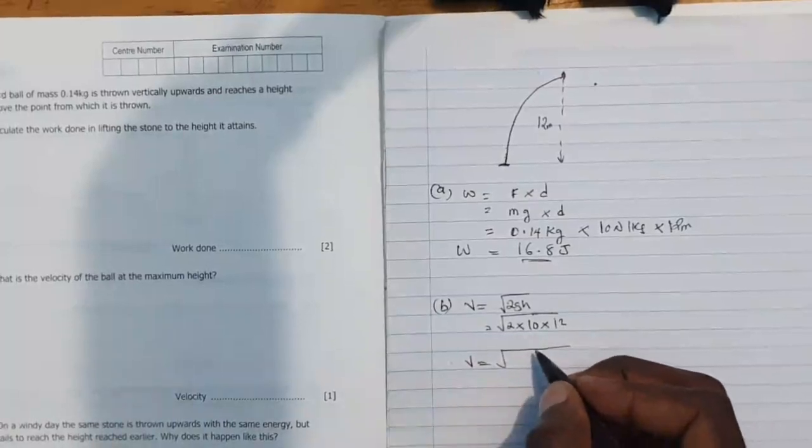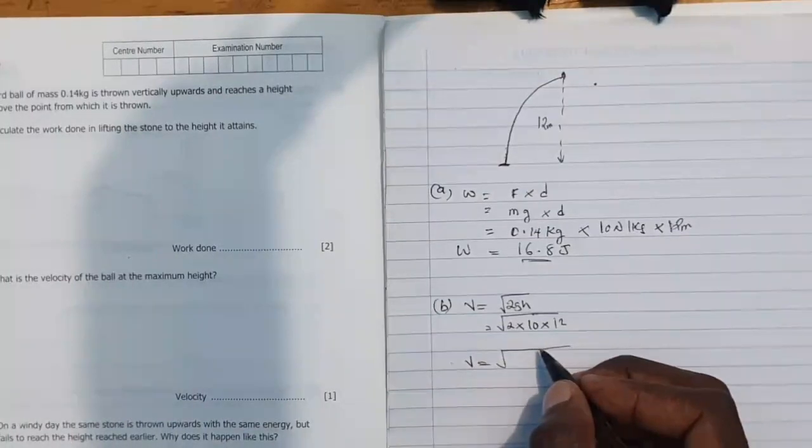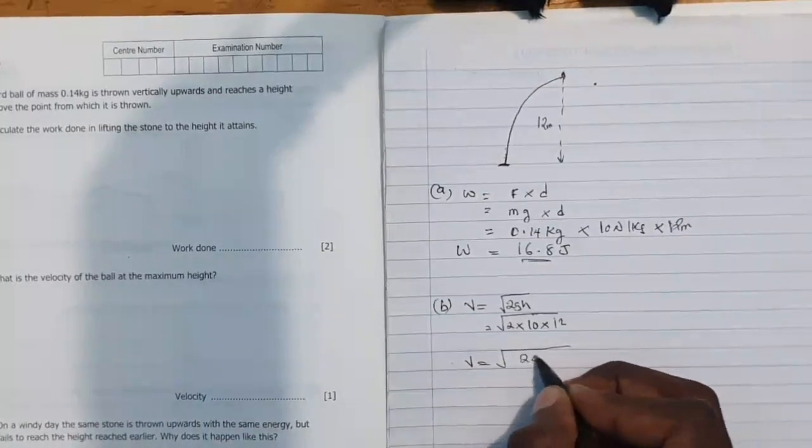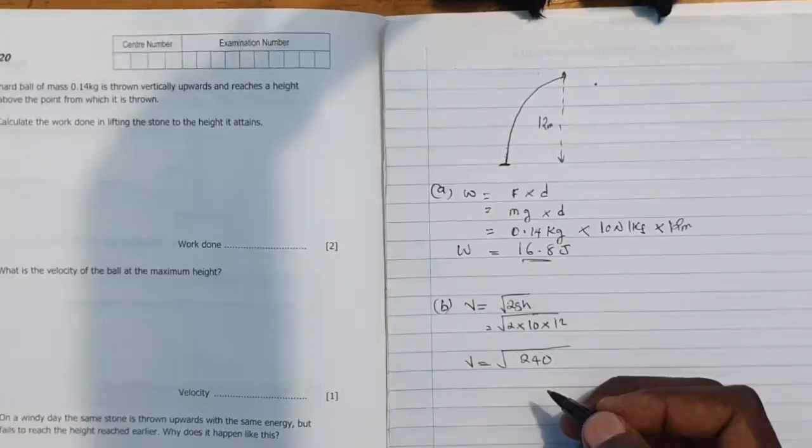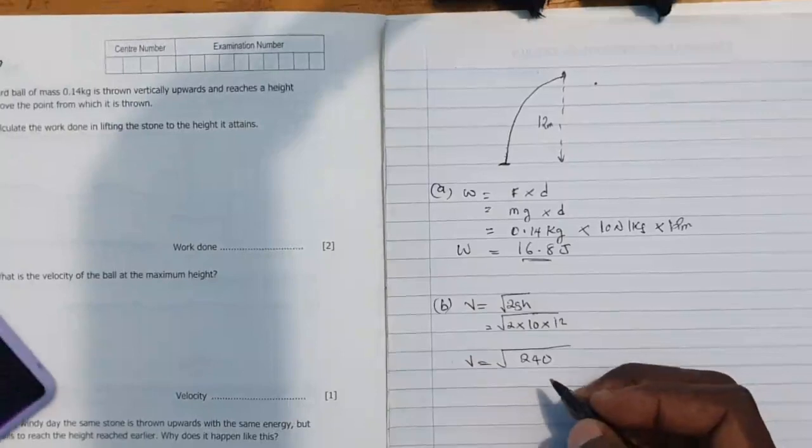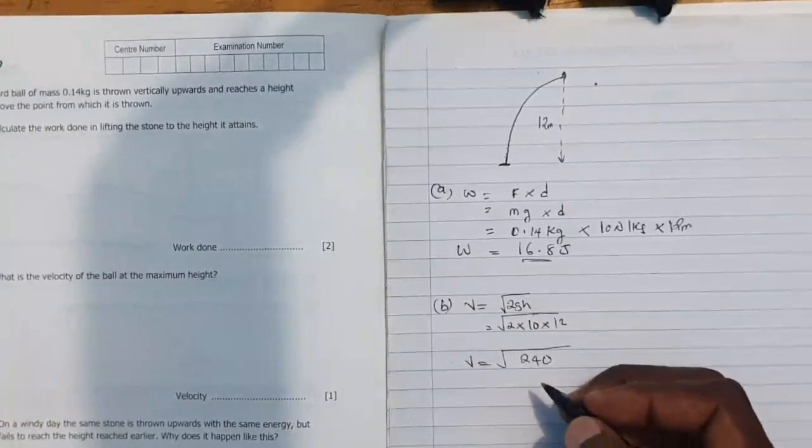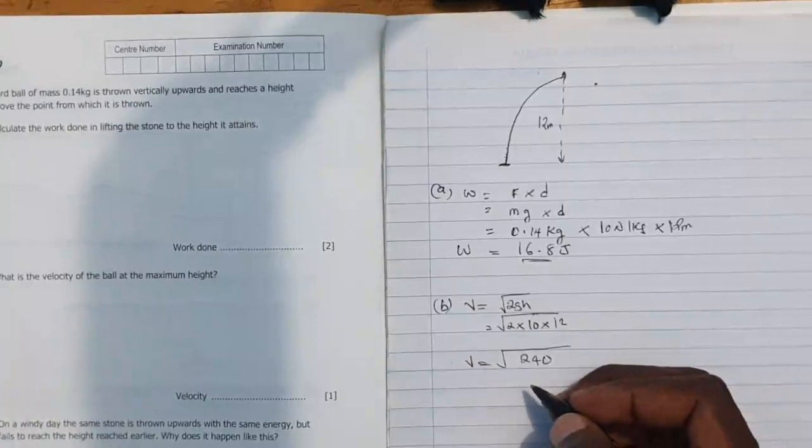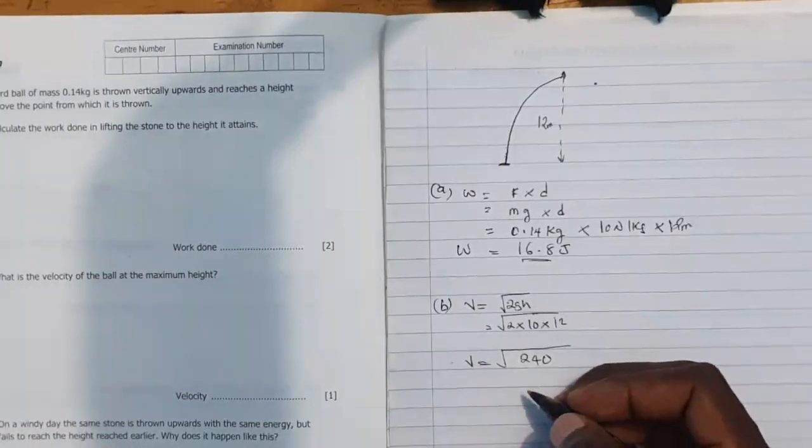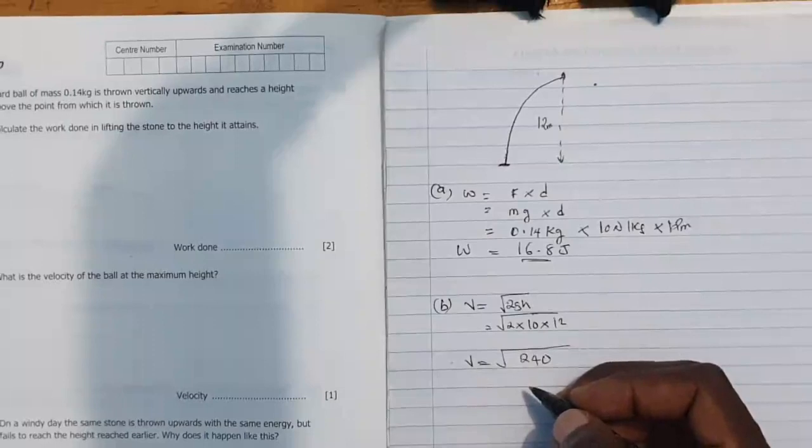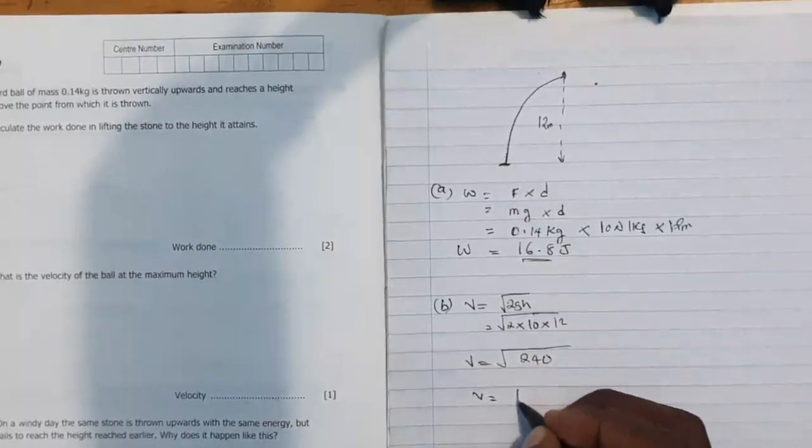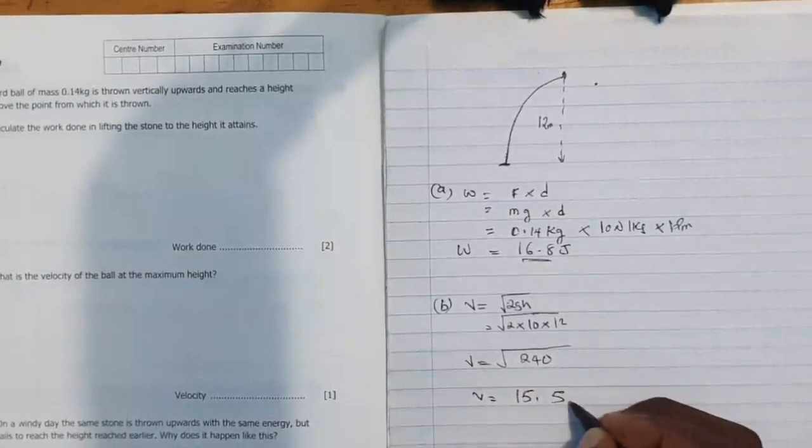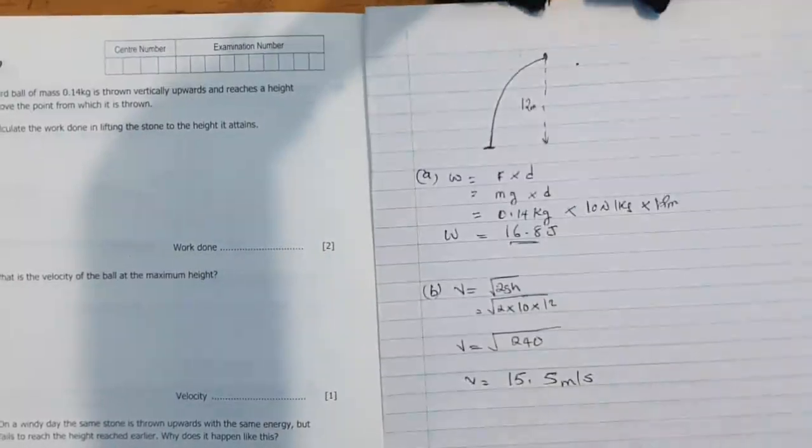So we have 2 times 10 times 12 as 240, then we need to find the square root of 240. So square root of 240, that's giving us velocity to be 15.5 meters per second. So that's our velocity.